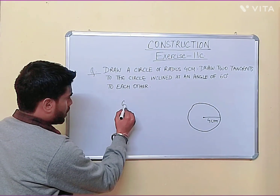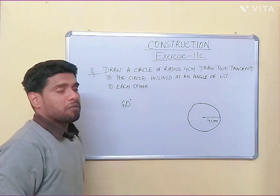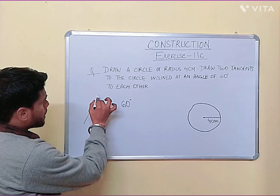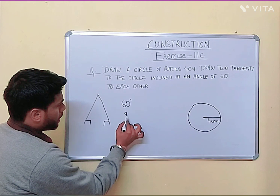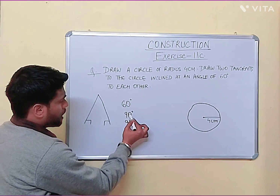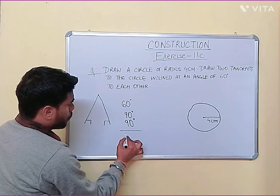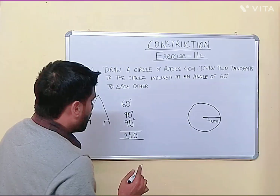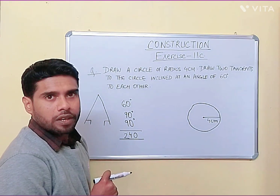That means you have to draw two tangents such that the angle between them is 60 degrees. But just because we have to draw 60 degrees, you don't have to think directly about 60 degrees. Each tangent makes 90 degrees with the radius, so 60 plus 90 plus 90 equals 240.